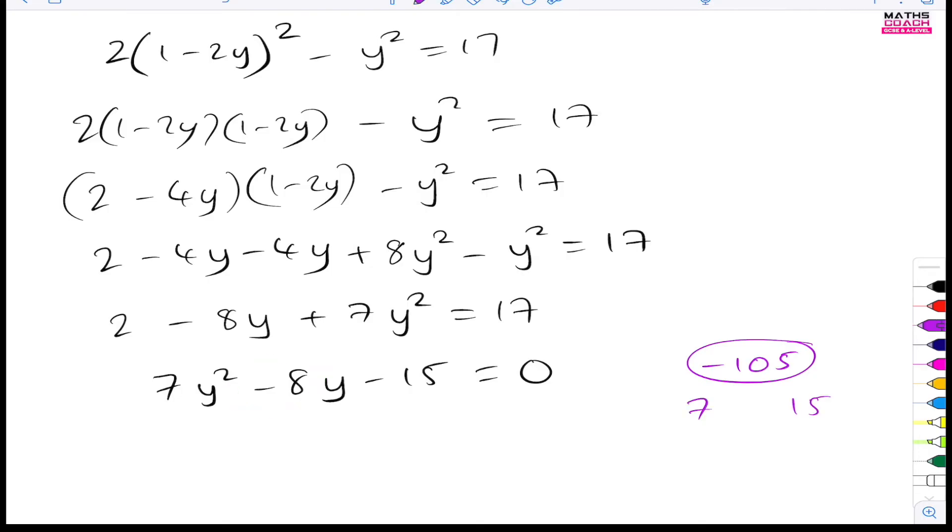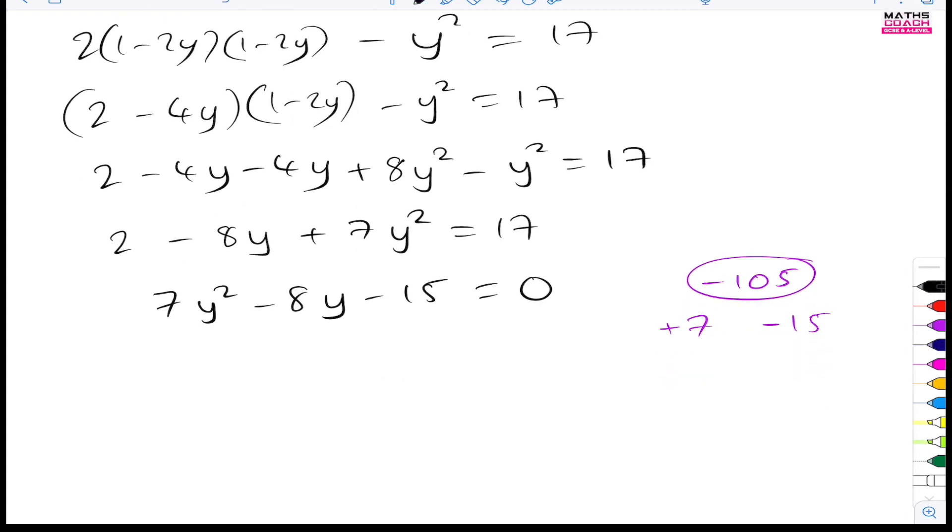7 and 15, when you multiply them, give you 105. And if you do minus 15 and add 7, you can get minus 8y. So what we do next is we write 7y squared and we write our minus 15 right there. And then in the middle, we'll add these two values with their y's. So it's going to be plus 7y minus 15y.